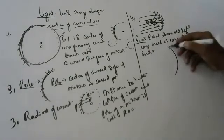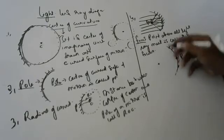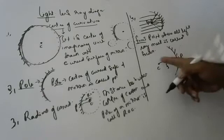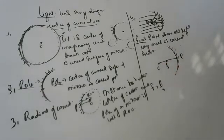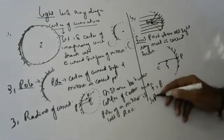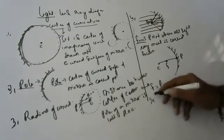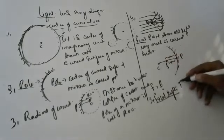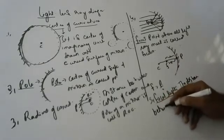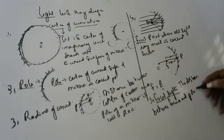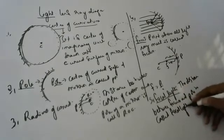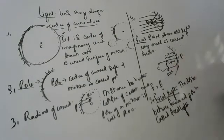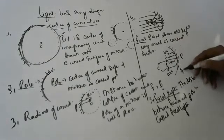The center of the mirror surface is called the pole, the center of the circle is called center of curvature, and the line joining them is the radius of curvature. The point where all light rays meet is called focus. Focus is exactly half of the radius of curvature. The distance between focus and pole is called focal length.